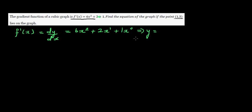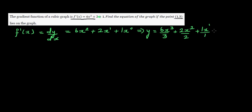When integrating a power function or polynomial, you increase the power by 1 and divide by the same power. So this becomes 6x³ divided by 3, plus 2x² divided by 2, plus 1x raised to 1 divided by 1, plus c.